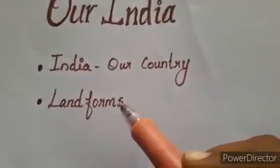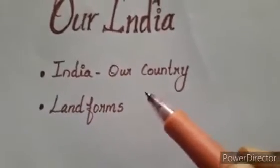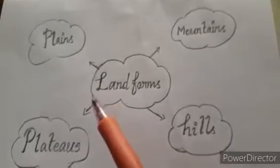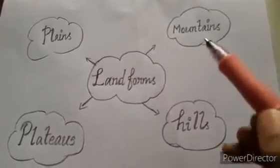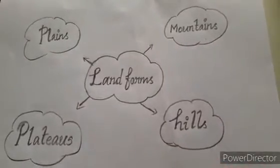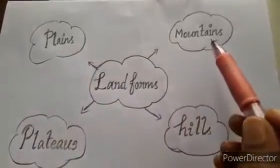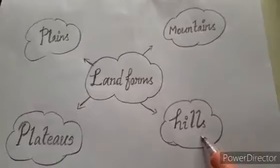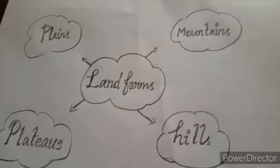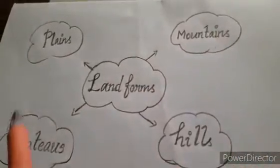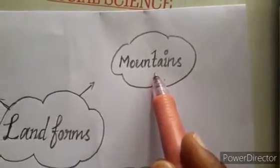Now we're going to see the landforms of our country — that is the second topic. There are different landforms in India. We have mountains, hills, plateaus, and plains. This variety of landforms makes our country look most beautiful. First we're going to learn about mountains.